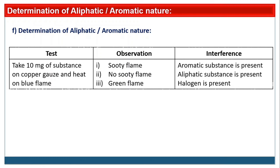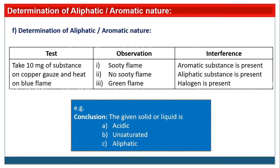After all preliminary tests, write the conclusion in this manner: 'The given solid or liquid is acidic' (or phenolic, basic, neutral), then saturated or unsaturated, then aliphatic or aromatic. There should be three observations at the end of all preliminary tests. Write the conclusion as: 'The given organic solid or liquid is acidic, saturated, aromatic' — combining type, saturation, and aromaticity.